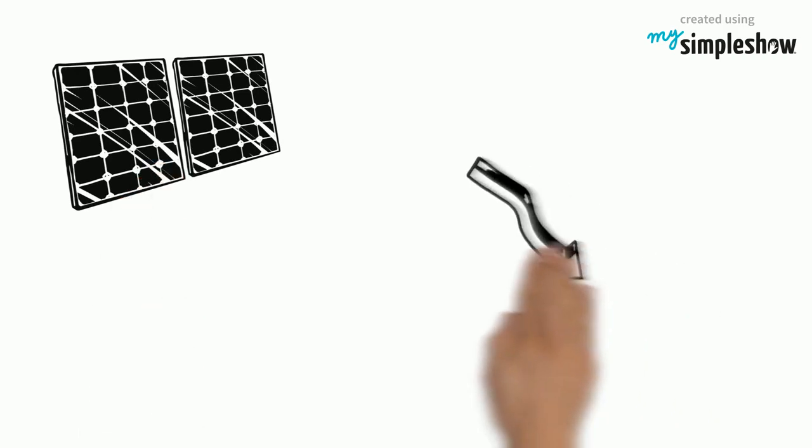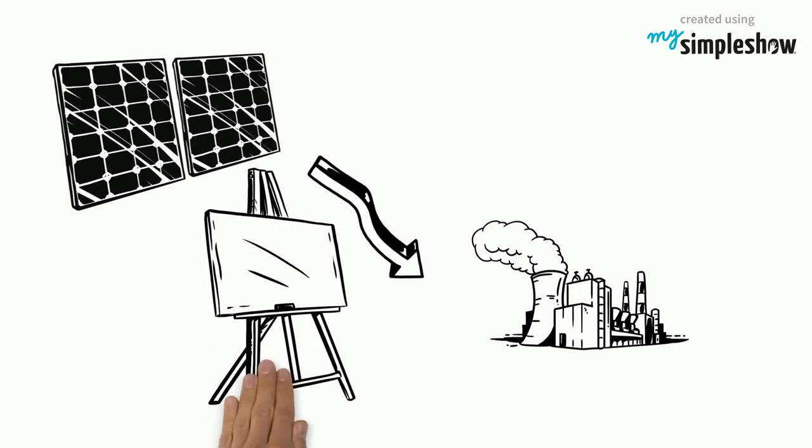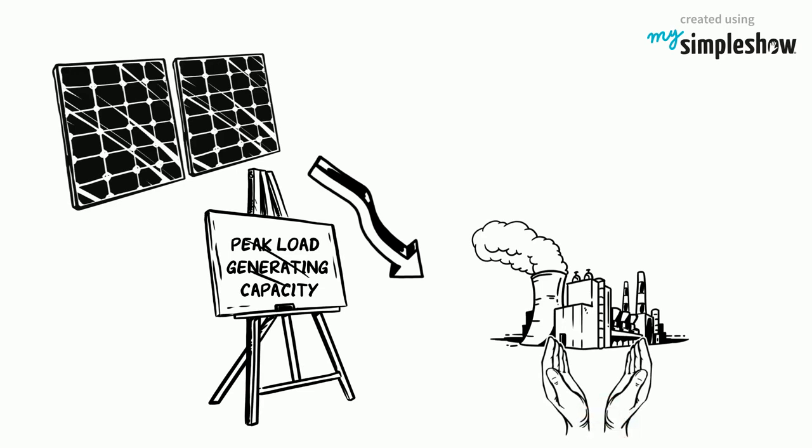Solar panels contribute to reducing climate change by reducing air pollution caused by utility companies. Using solar power creates big load generating capacity, which saves utilities from using polluting supplemental systems during times when demands for energy are high.